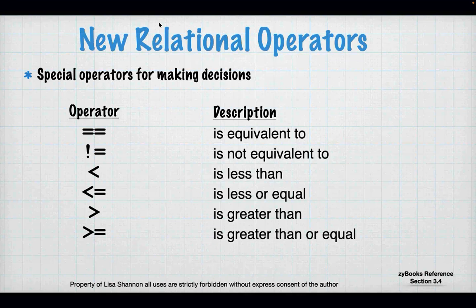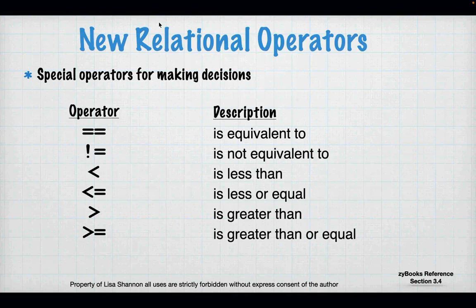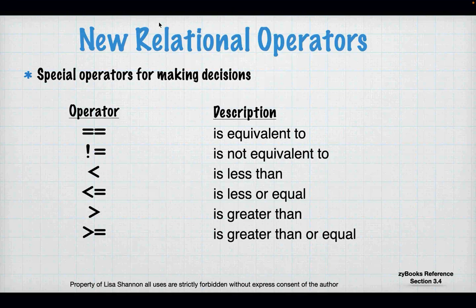The operators we've used so far have been the equal sign, plus, minus, and divide. Now we have relational operators, which are used specifically to help us make decisions. There are six: the first is the double equal sign. The single equal sign is used for assignment; the double equal sign is used to ask a question — specifically, are these two things equivalent? It will never do assignment.